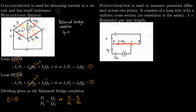Now we talk about the potentiometer. A potentiometer is used to measure the potential difference across two points — sometimes these two points are the two ends of a battery, which is what we will do in our example. It consists of a long wire AB with a uniform cross section, meaning it has a constant resistance per unit length. We have a known battery E and we want to find the potential of an unknown battery E_U.